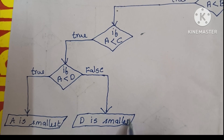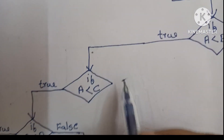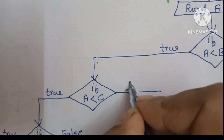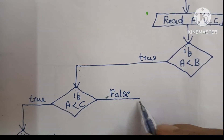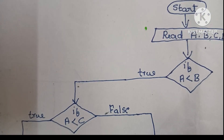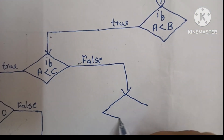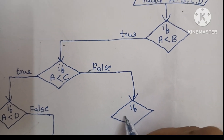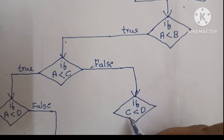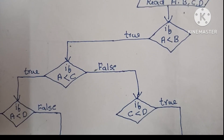Output values are always written within a parallelogram shape. If A less than C is false, we have to compare C with D. If C less than D and this condition is true, we have to print C is smallest.